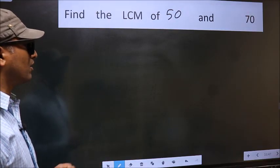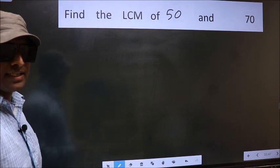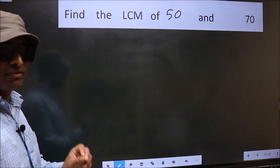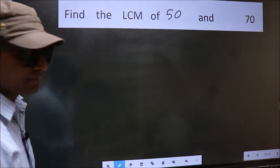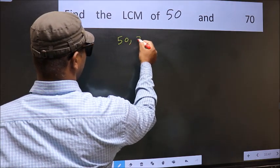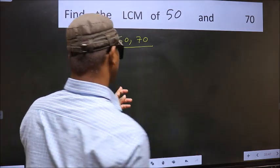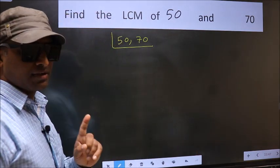Find the LCM of 50 and 70. To find the LCM, first we should frame it in this way: 50, 70. This is your step 1.